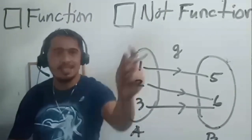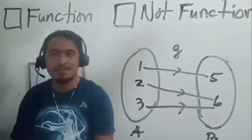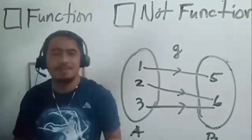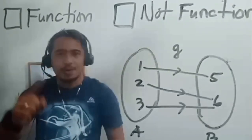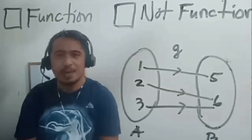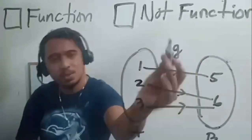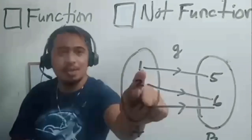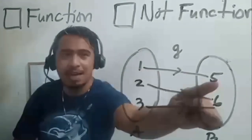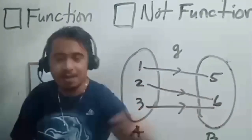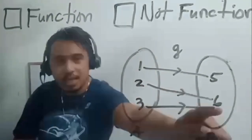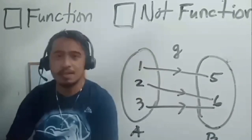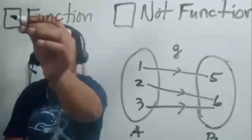How about rule G — is it a function? Condition 1: elements 1, 2, and 3 of the domain are all used — no problem. Condition 2: 1 is assigned to 5 only, 2 is assigned to 6 only, and 3 is assigned to 6 only. Both conditions are satisfied. Therefore, it is a function.